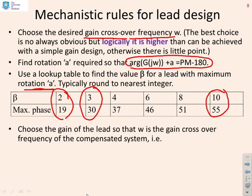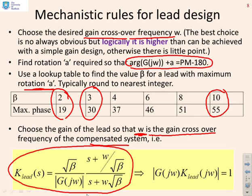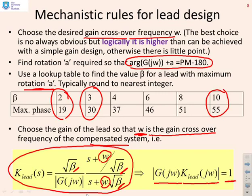Next, choose the gain of the lead so that your chosen ω is indeed the gain crossover frequency of the compensated system. The lead compensator is designed with the formula: √β × (s + ω/√β) / (|G(jω)| × (s + ω√β)). When you substitute your chosen ω into |G(jω)| and |K|, you get 1, confirming the correct gain crossover frequency. The formula includes your desired gain crossover frequency ω, your β from the table, and the modulus of G to ensure the correct crossover for the compensated system.